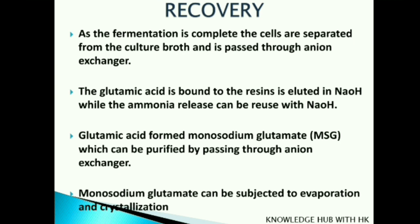In the product recovery process, the bacterial cells are separated and the broth is passed through a basic anion exchange resin. Elution is performed with NaOH to directly form monosodium glutamate. MSG may be crystallized directly, followed by further conditioning steps like decolorization and sieving to yield a food-grade quality monosodium glutamate.